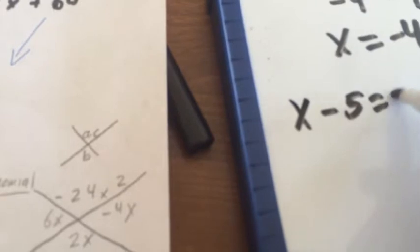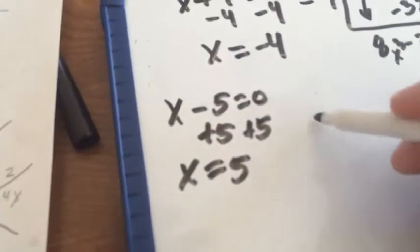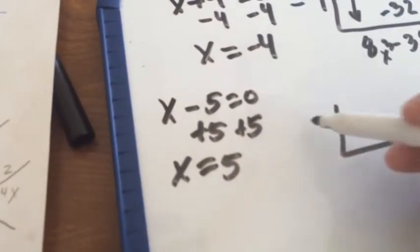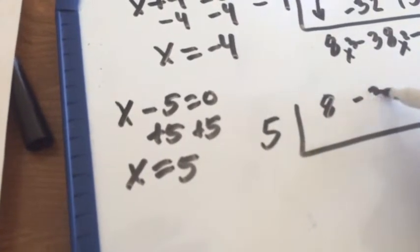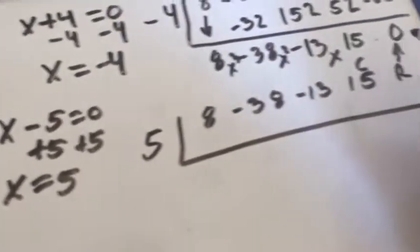x minus 5 equals 0, plus 5 on both sides, and x equals 5. We're going to divide by positive 5. We had an 8, a negative 38, a negative 13, and a positive 15.